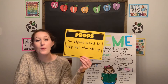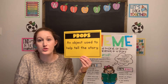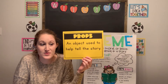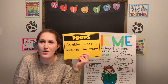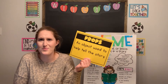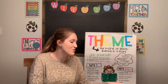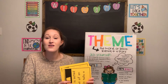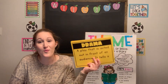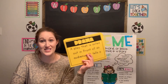And last, we have props. Props are objects used to help tell the story and they can be really handy. Sometimes it's really hard to tell stories without props, because then it's just you and other people standing up there talking. So those are the elements of drama that we have been talking about, and we will see many of those elements in our play today.